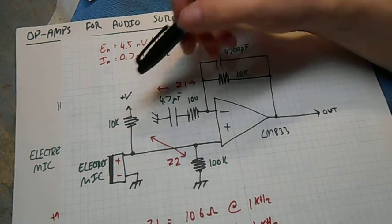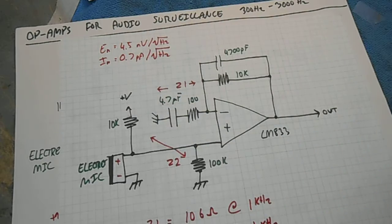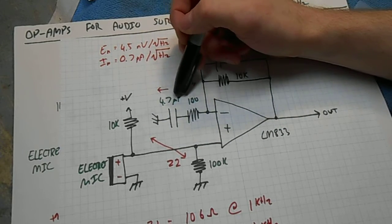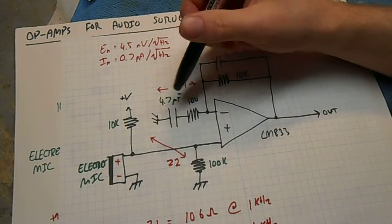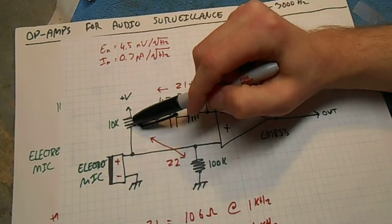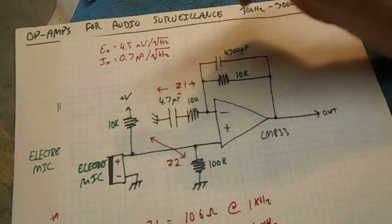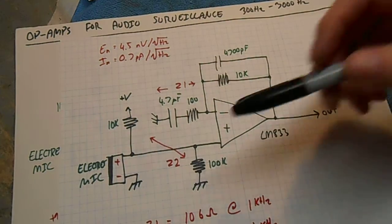On the inverting to ground here, we have our 100 ohm resistor in series with our 4.7 microfarad capacitor. We call that Z1. And then we have the 10K microphone bias resistor, in parallel with our 100K op-amp bias resistor. We'll call that Z2.